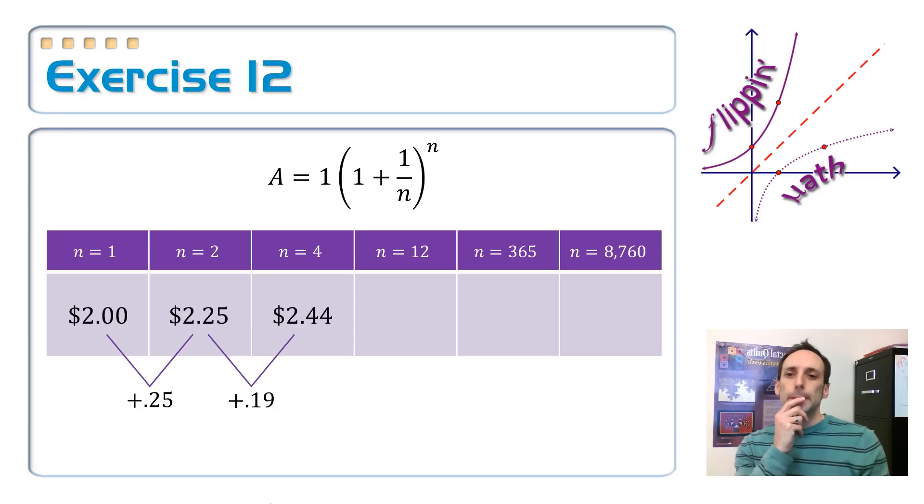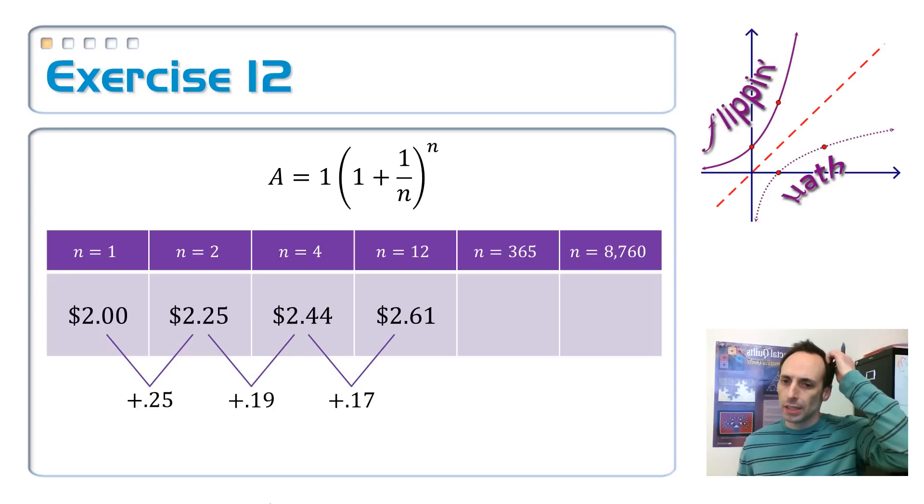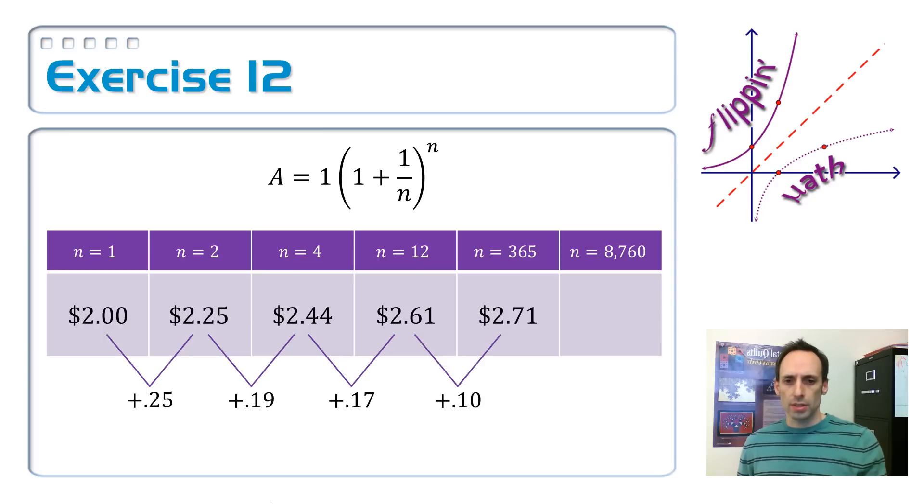How about if they did it monthly? So n is 12. So I plugged 12 into the formula. I got $2.61. That only went up by 17. Man, I compounded it like three times as much. What about if I compounded every single day? 365. That's got to be pretty big, right? Oh man. That only went up by 10 cents.